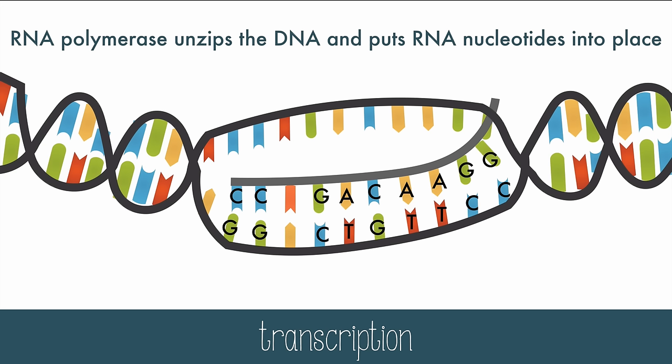A and T nucleotides match up, but any time the RNA places a complement to an A on the DNA, it places a U instead of a T in the RNA. RNA uses uracil instead of thymine.